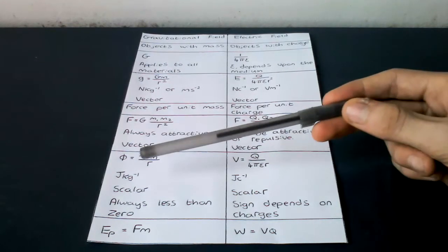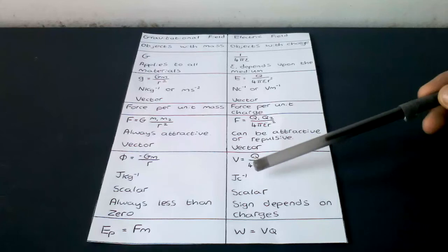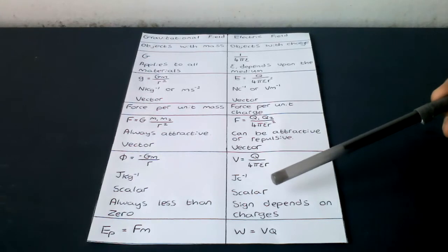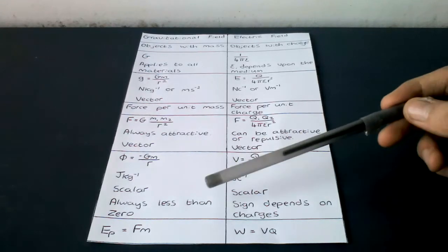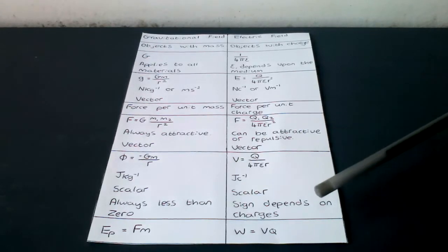The units are j kg to the minus 1 or jc to the minus 1. They are both scalar, always less than zero, and sign depends upon the charges.